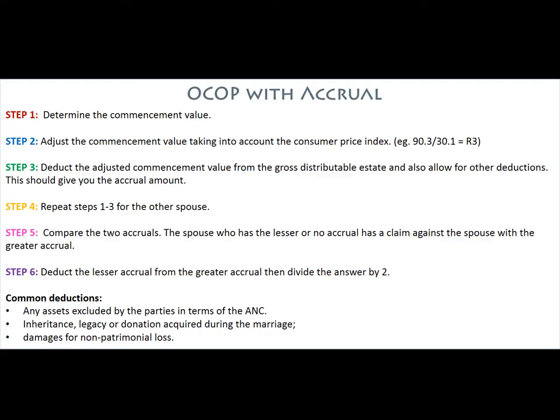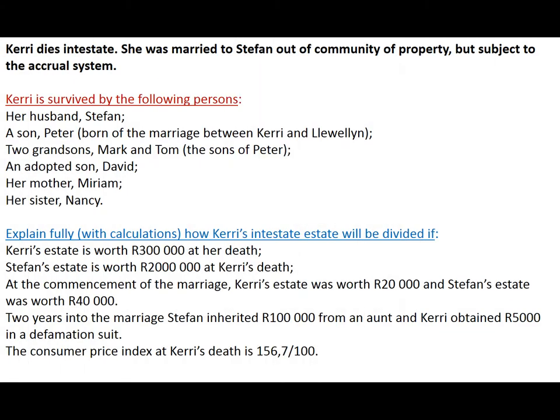When dealing with an estate where the spouses are married out of community of property with accrual, there are certain steps that must be followed to determine the estate of the deceased. Let's look at an example of Carey's estate. Carey was married to Stefan out of community of property but subject to the accrual system. Carey is survived by her husband Stefan; her son Peter, born of a previous marriage between Carey and Llewellyn; two grandsons Mark and Tom, the sons of Peter; an adopted son David; her mother Miriam; and her sister Nancy.